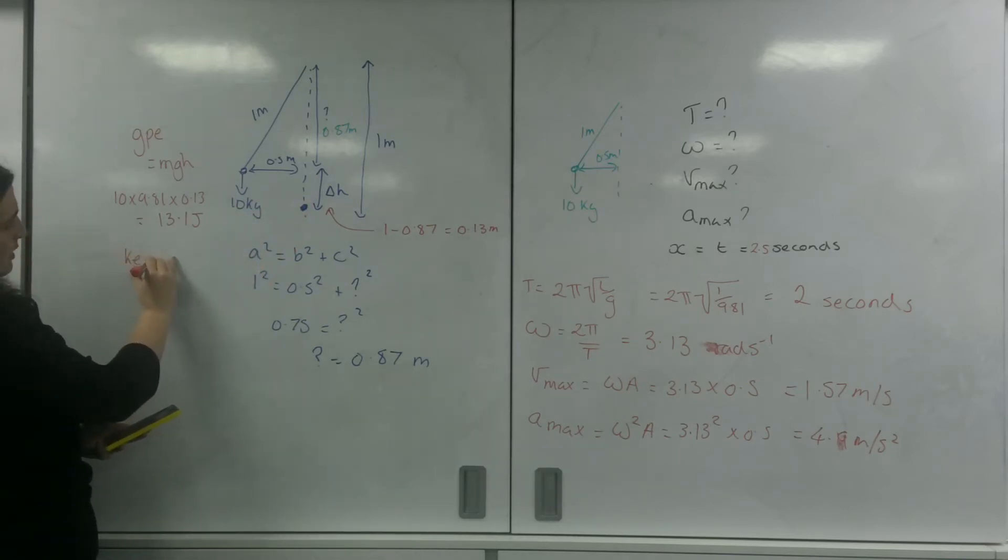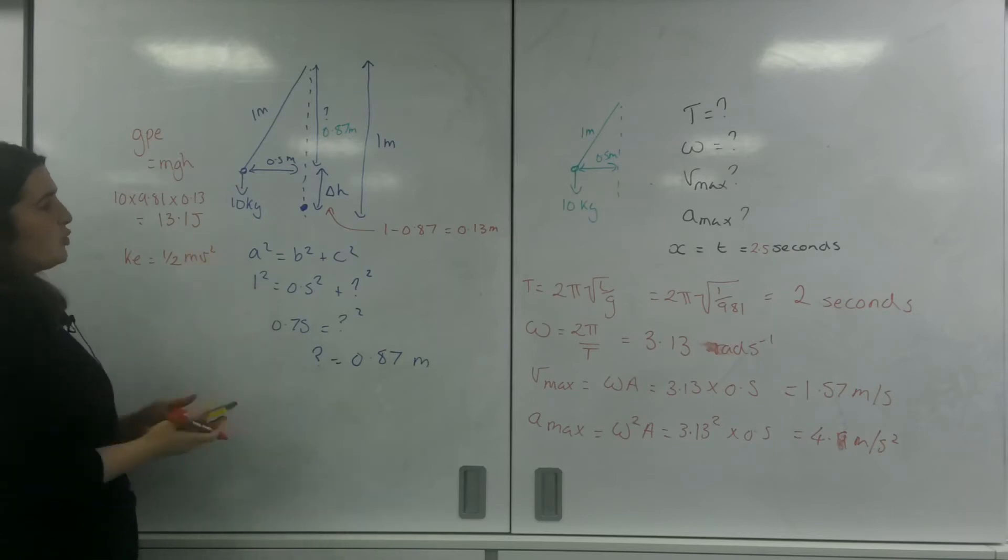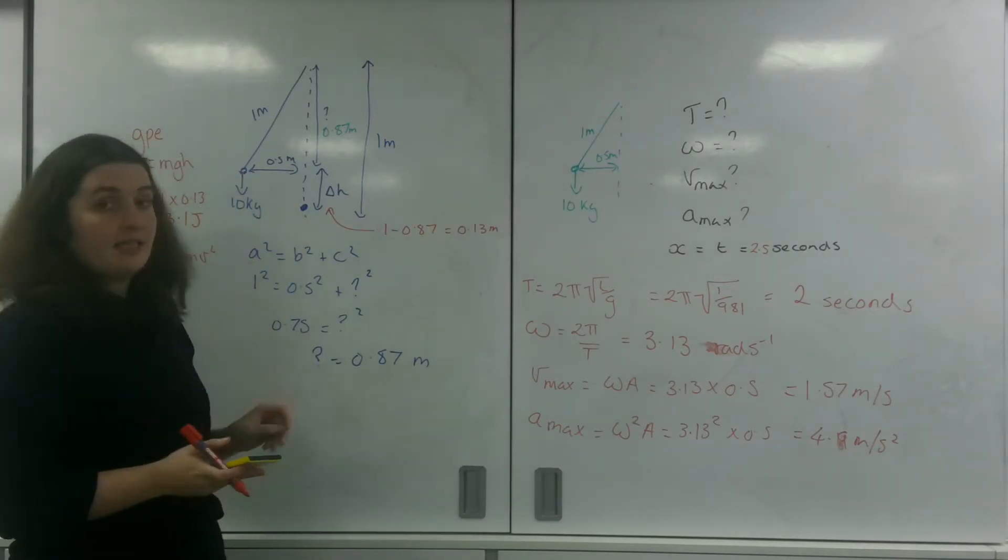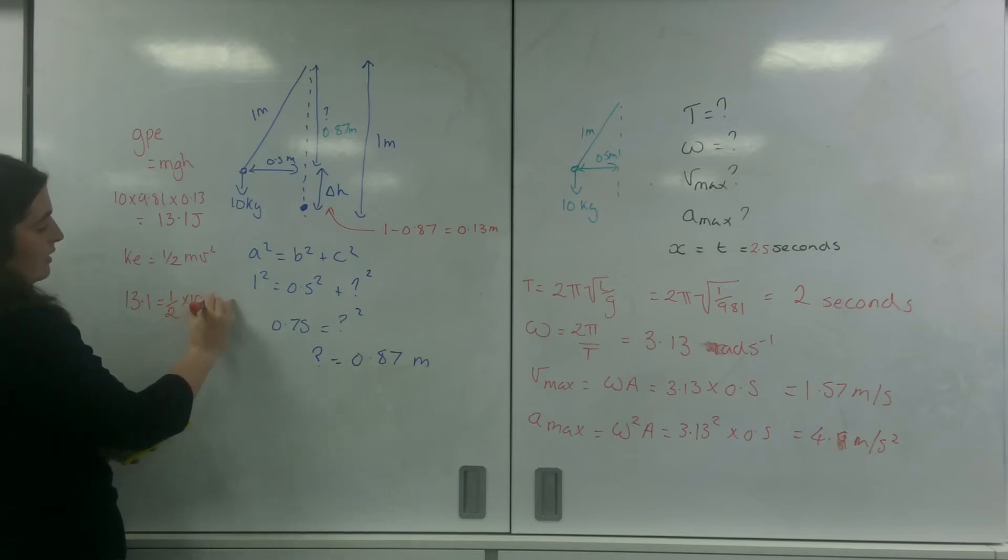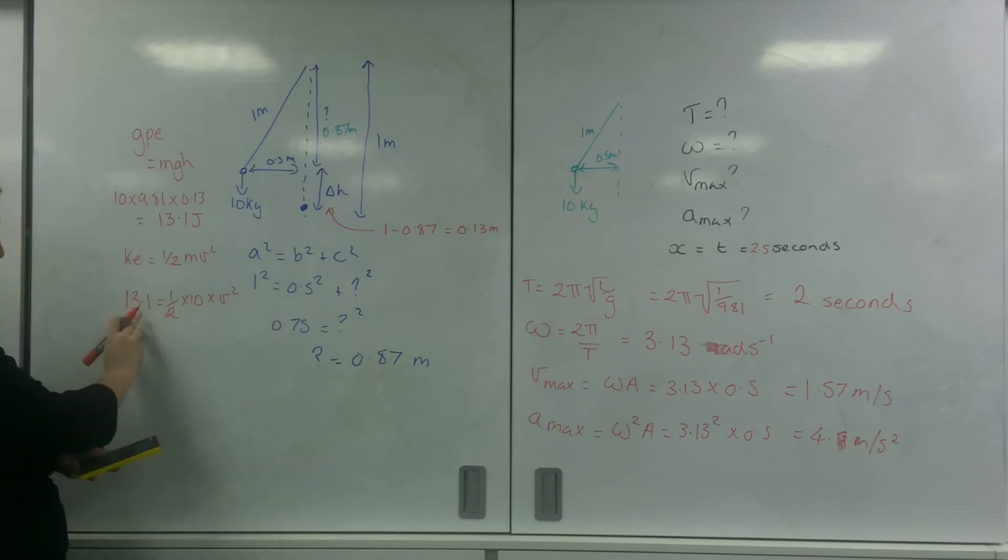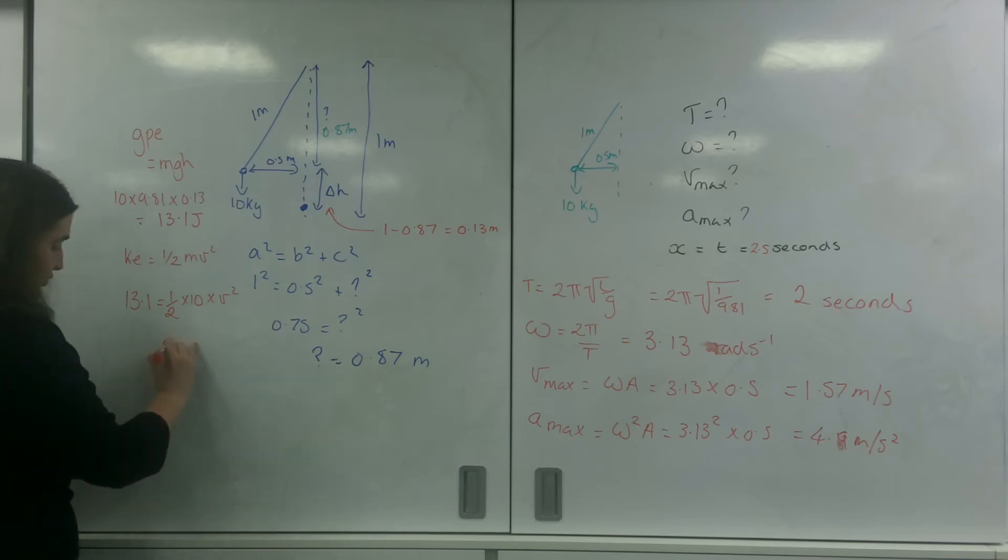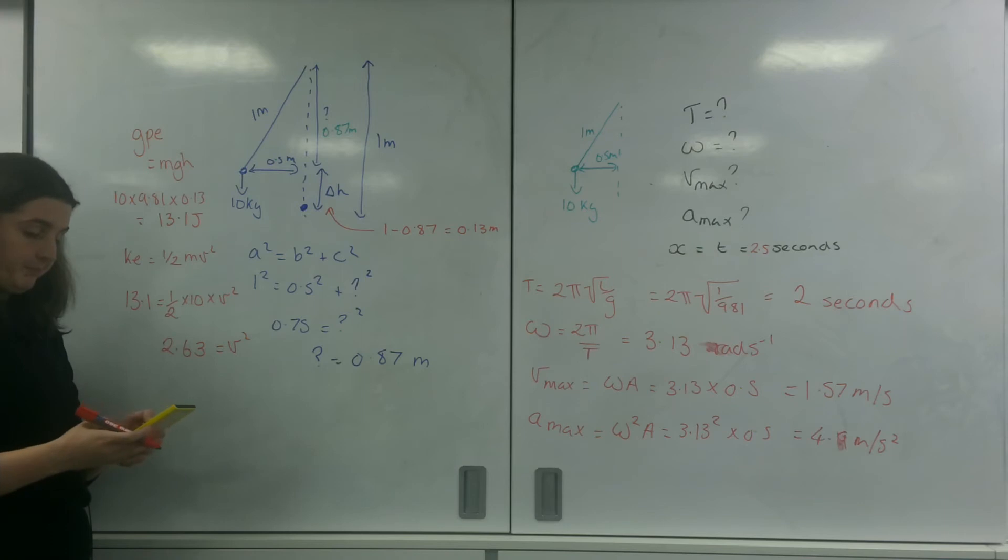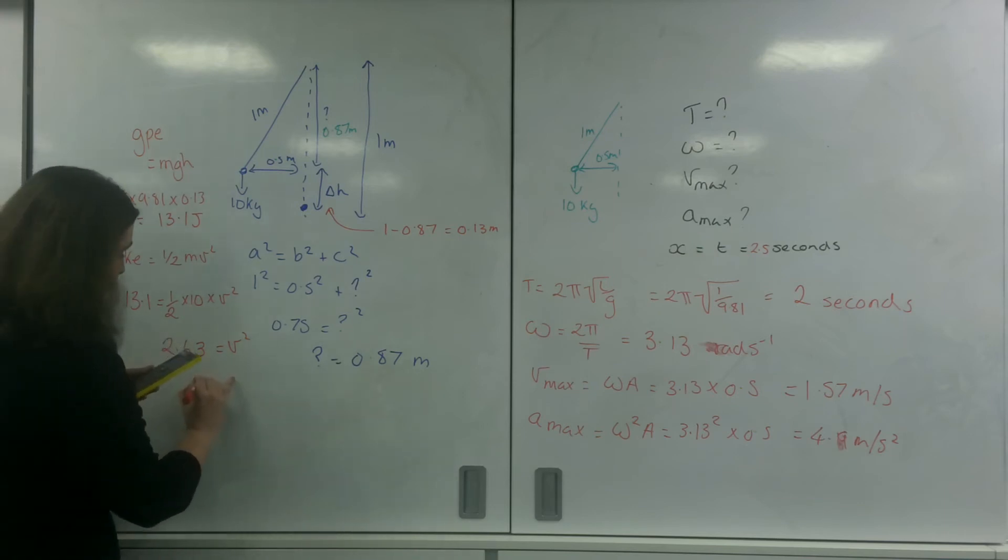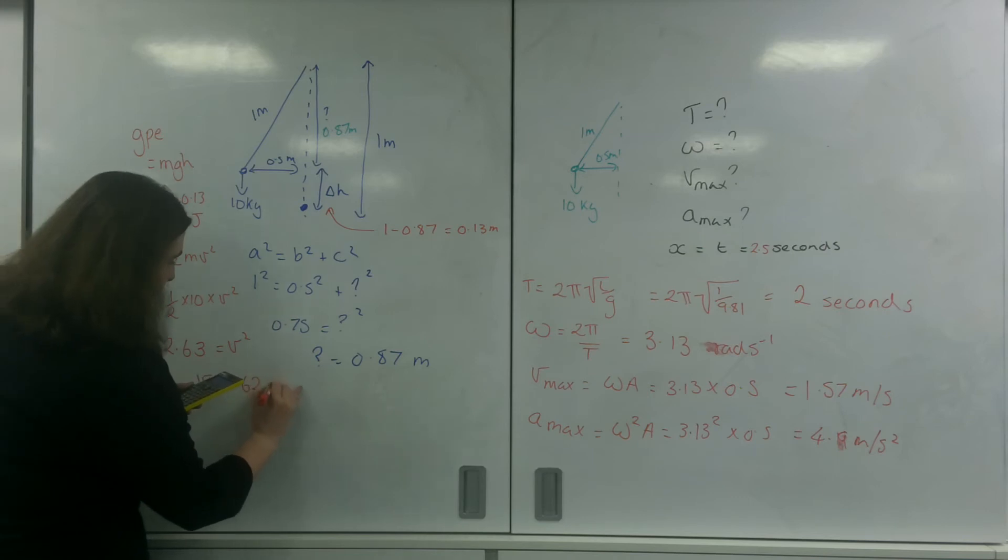Kinetic energy, half mv². So I'm assuming that all of my GPE is being converted into kinetic at the end. So all of this is being converted into my velocity, into this kinetic energy. So what I'm going to do is I'm going to work out what my velocity would be. So 13.1 is a half times 10 times v². So 13.1 times by 2 divided by 10 is 2.63 equals v². I'm just going to square root that. And I'm going to get an answer of v is 1.62 meters per second.